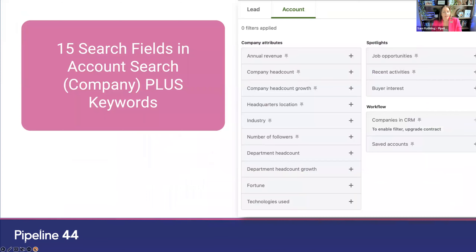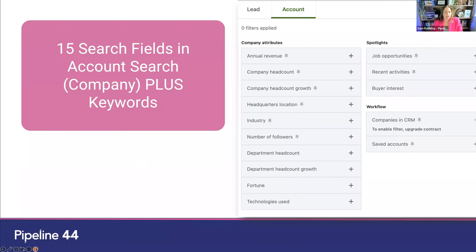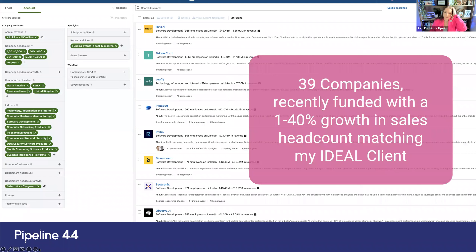When looking for companies — called accounts in LinkedIn — there are 15 search fields available for account searches. You can filter by industry, specific technology they use (for example, if it's important that they currently use Salesforce or Sage, you can use that as a search field), headcount, or growth. I look for companies with a growing sales force — for example, showing companies with a sales growth of 10 to 100%. These are things you can do in account searches to help you find your ideal client and prospect more effectively.